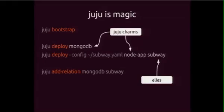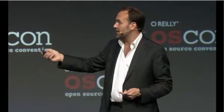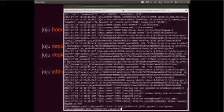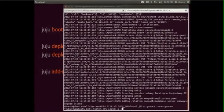We use Juju charms. A charm is just a distillation of ops goodness — we have packages for binaries and charms for all of the operational goodness that goes into that. So I'm deploying the Mongo charm, then deploying the Node app charm and calling it 'subway,' and then telling those two to connect to each other. That's literally all I have to do.